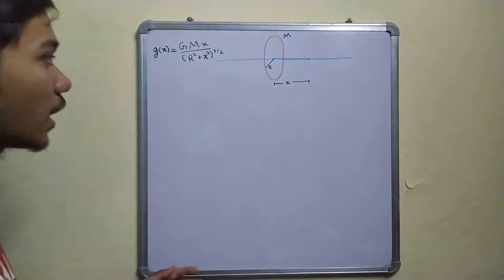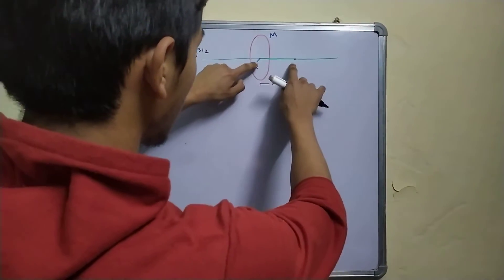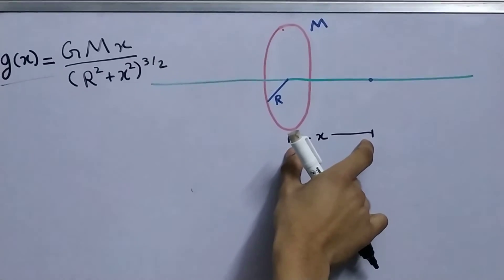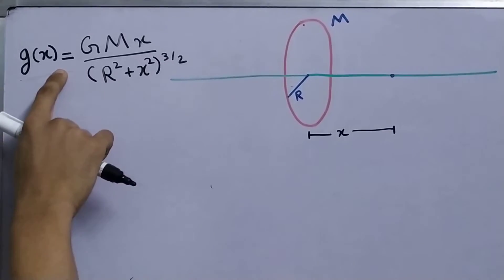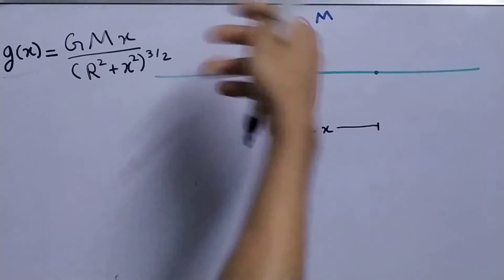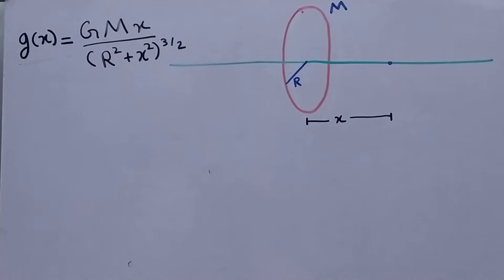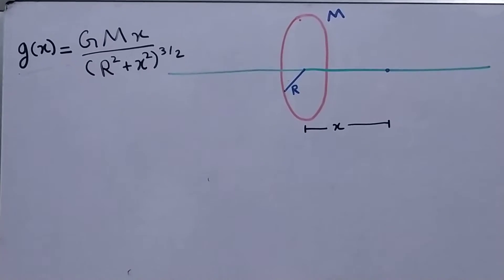Friends, in this video we will be solving a problem. We have to figure out the distance from the center of a ring having mass M and radius r such that the gravitational field intensity will be maximum. First, let us understand why we will have a maximum in the first place using a very physical reason.